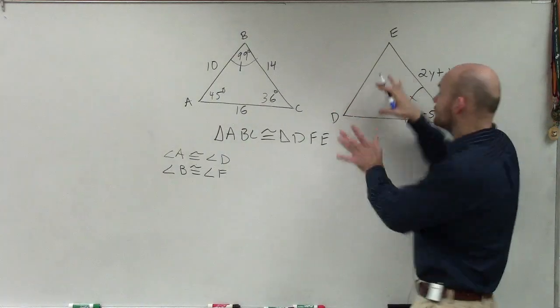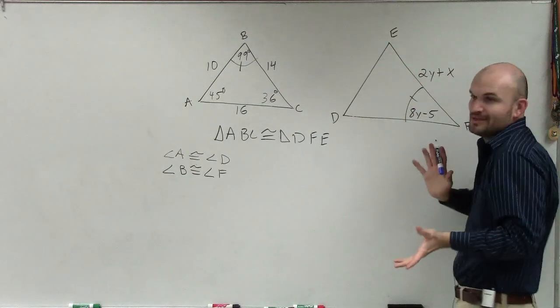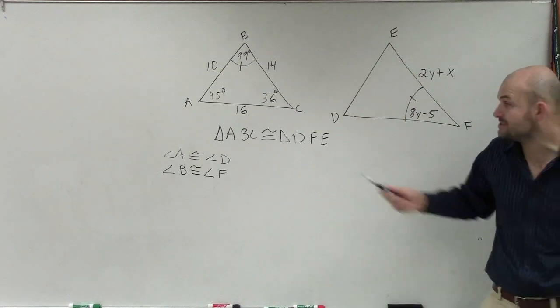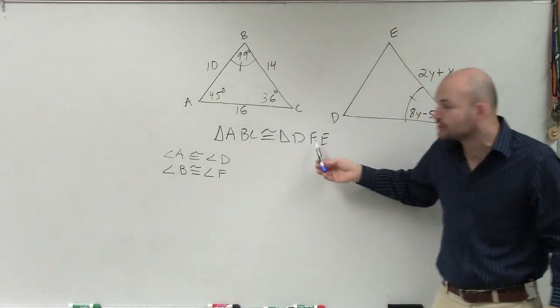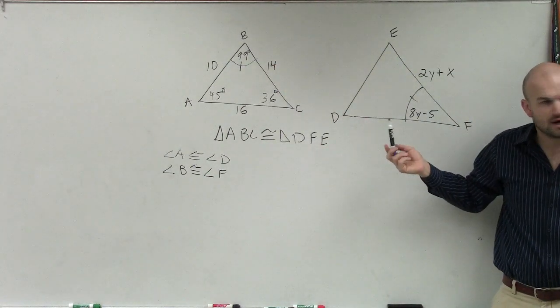So actually, this triangle has been switched around. I know it doesn't look like it's congruent, or you might say, oh, well, E has to be equal to B. No, that's not what the directions say. They say B is congruent to F. That means these two angles are equal in measure.